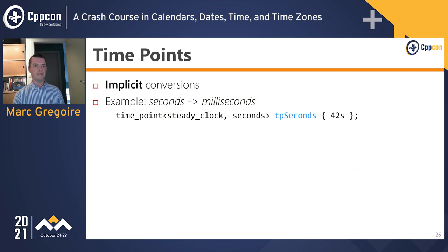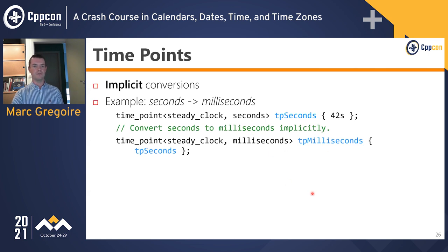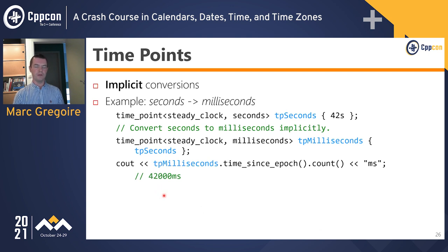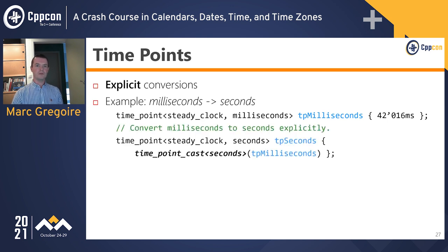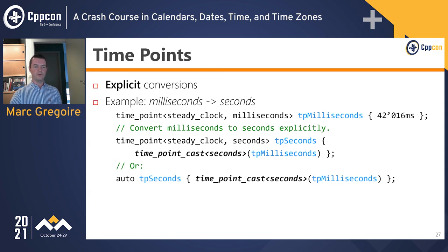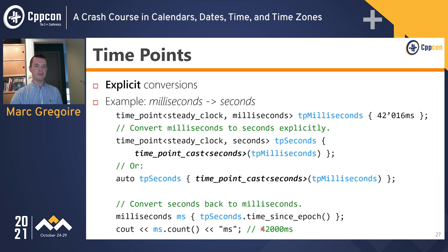Time points can be converted as well. Implicit conversions are supported for lossless cases — for example, converting TP_seconds (42 seconds) to milliseconds is implicit, giving 42,000 milliseconds. If the conversion can result in data loss, you need an explicit conversion using time_point_cast, similar to duration_cast. Starting with 42,016 milliseconds and explicitly casting to seconds, then converting back to milliseconds, gives 42,000 milliseconds because precision is lost in the seconds step.